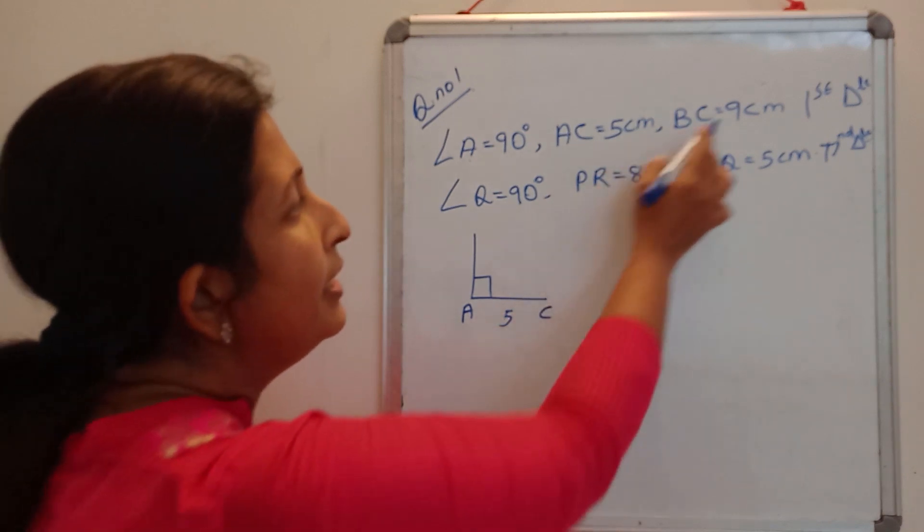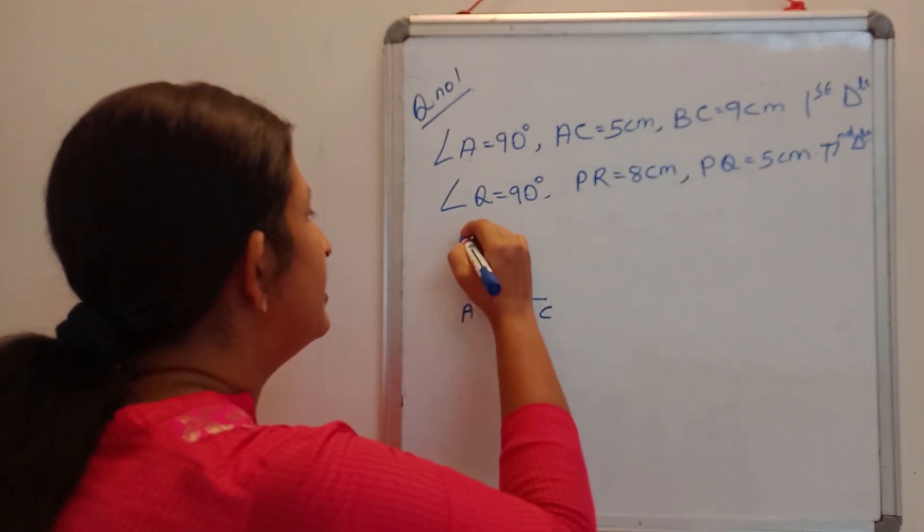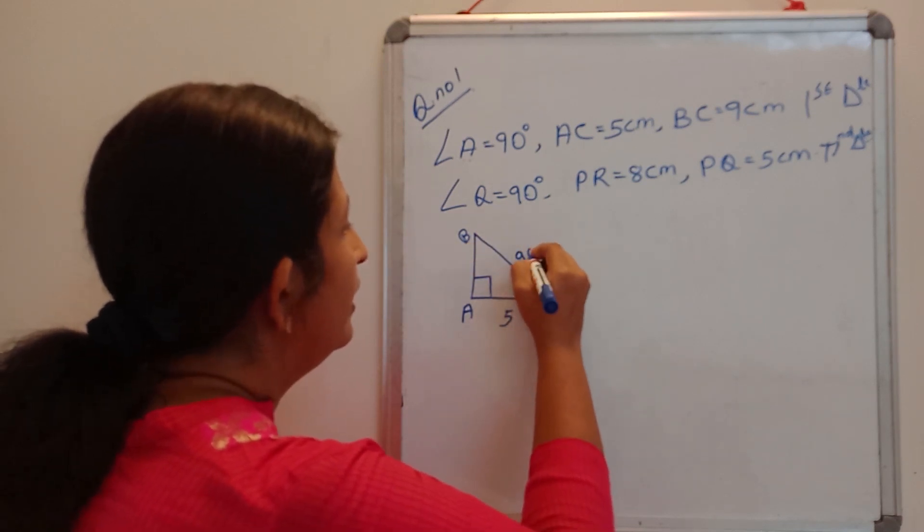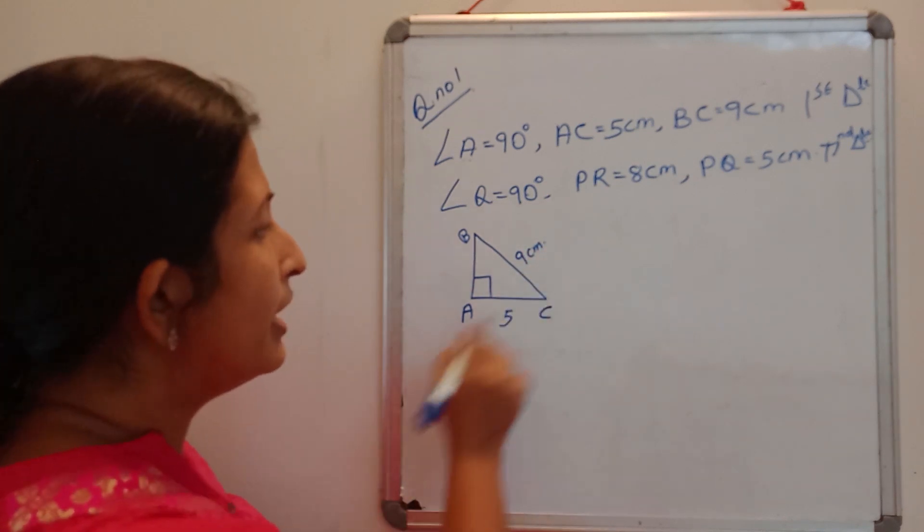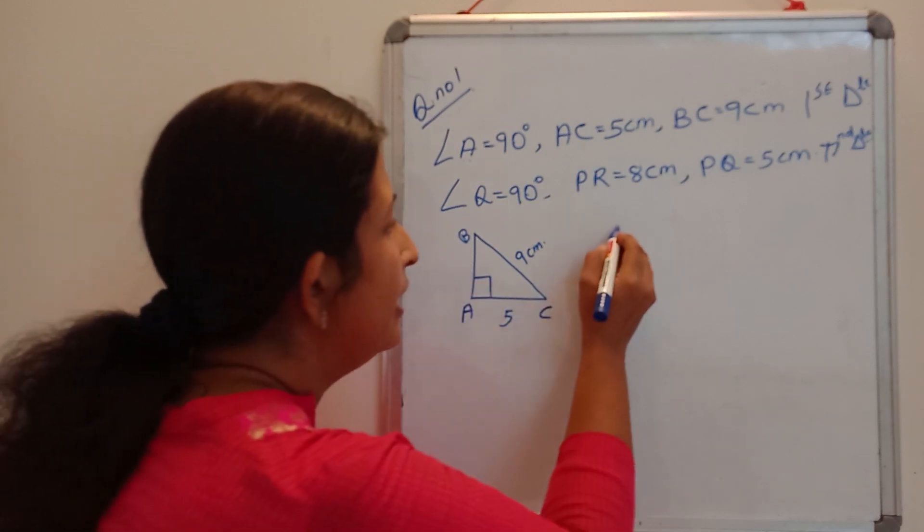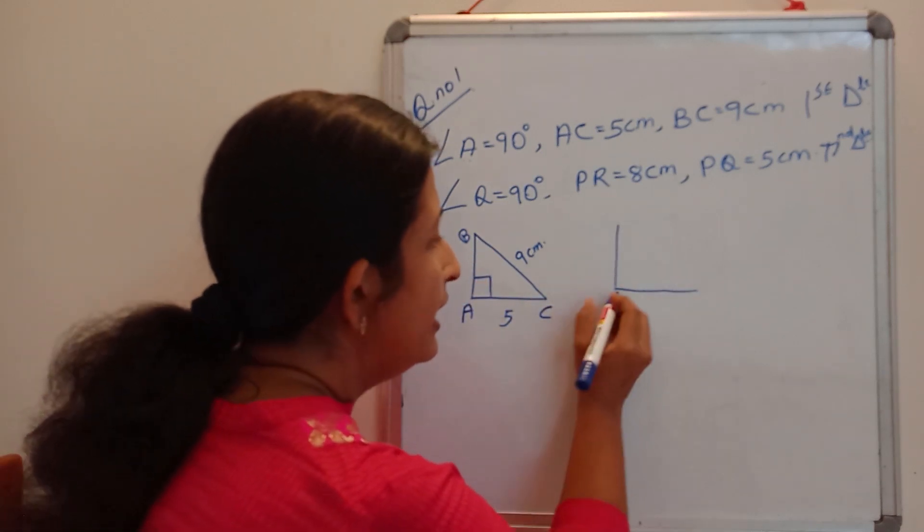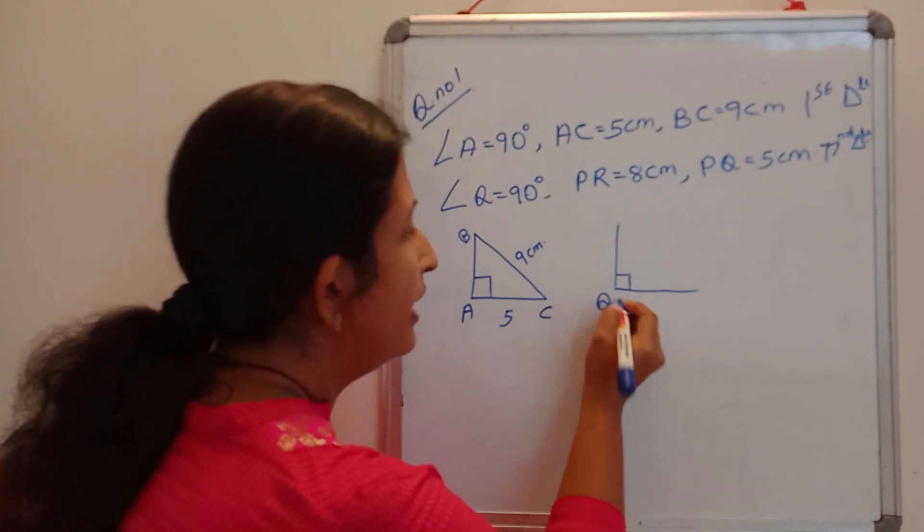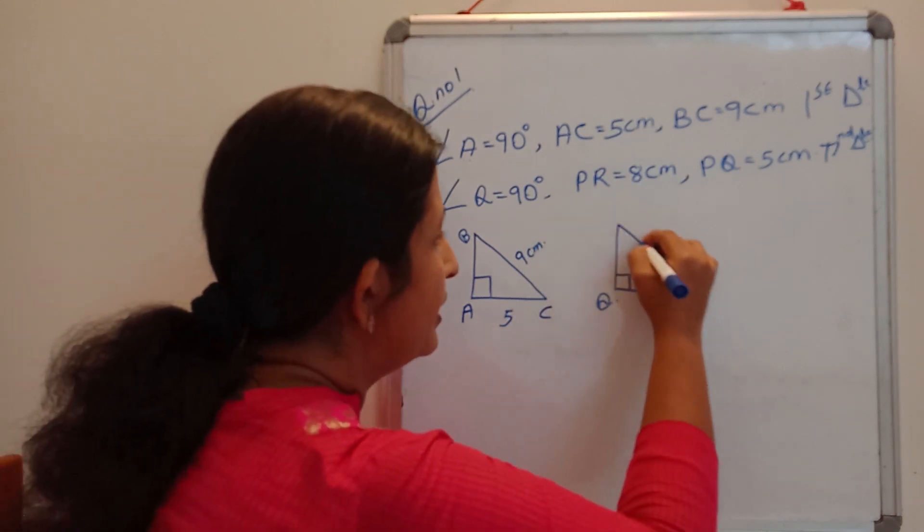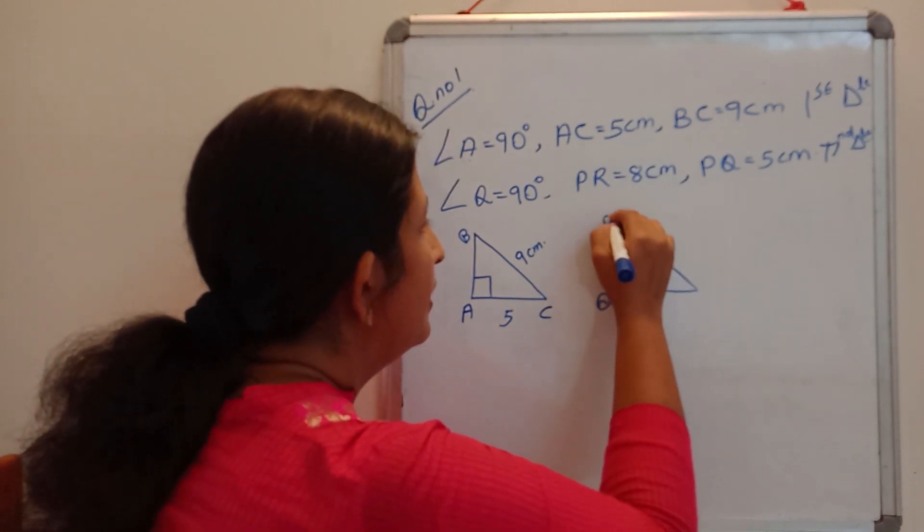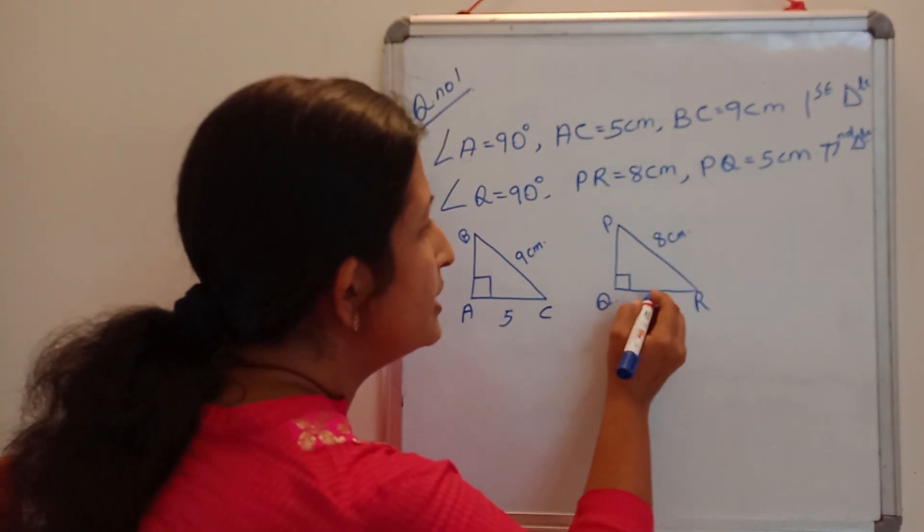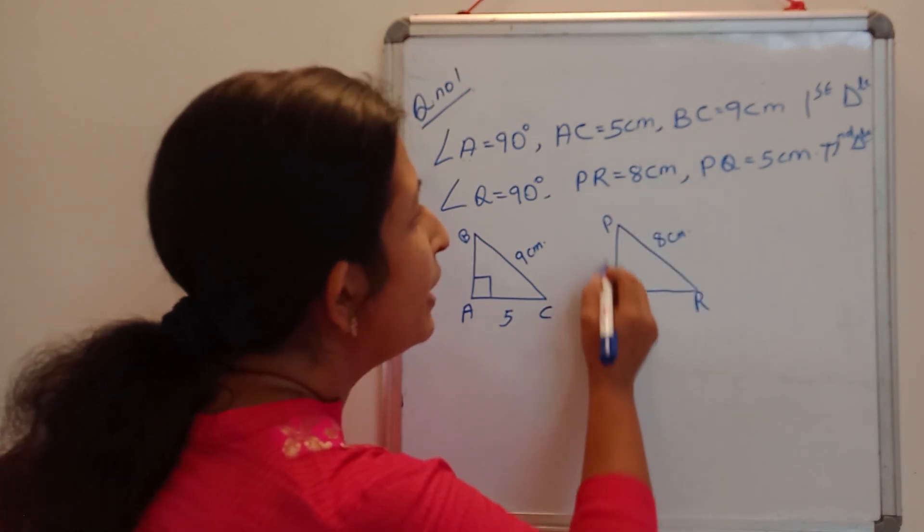5 centimeter. BC is 9 centimeter. Here it is B. BC is 9 centimeter. So first triangle we can construct. The next one, angle Q is 90. So I can draw here it is the right angle and here the point is Q. Then PR is 8 centimeter. P and R, PR is 8 centimeter. PQ is 5 centimeter.